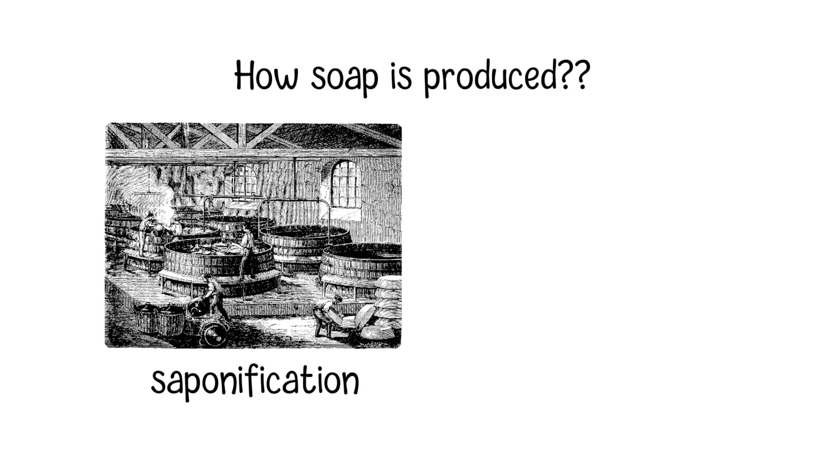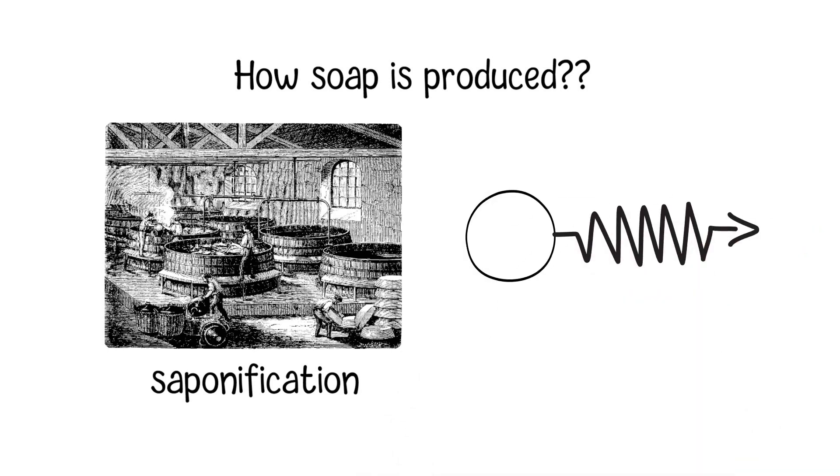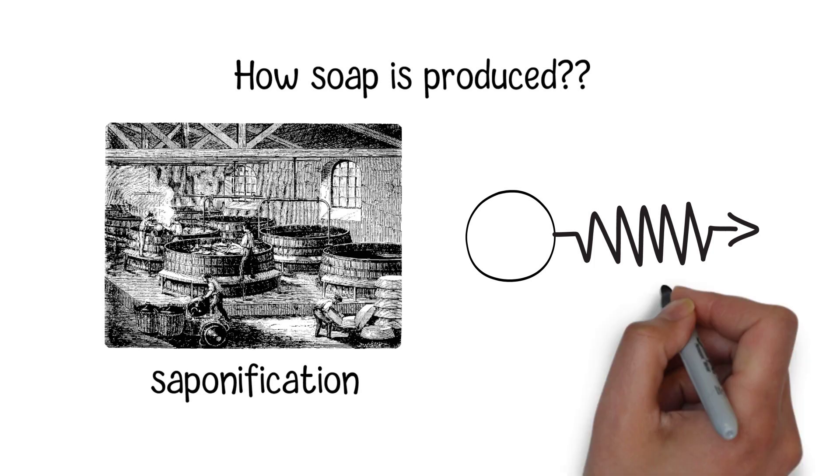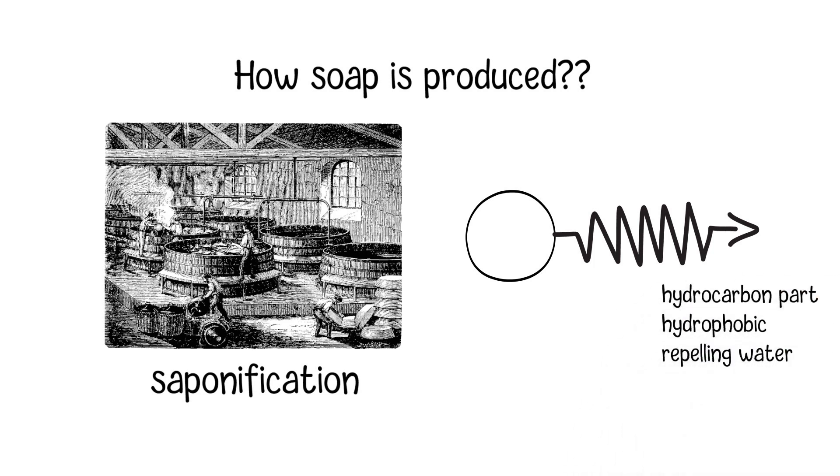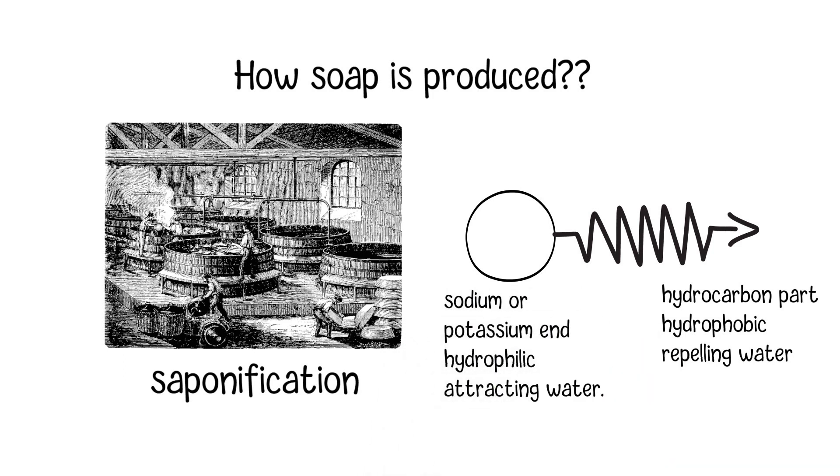Once the soap is manufactured, soap molecules are composed of a hydrocarbon chain with a sodium or potassium atom at one end. The hydrocarbon part of the chain is hydrophobic, repelling water, while the sodium or potassium end is hydrophilic, attracting water.